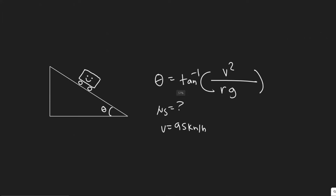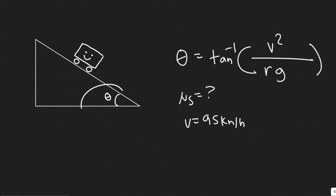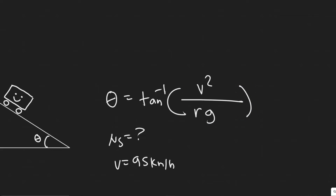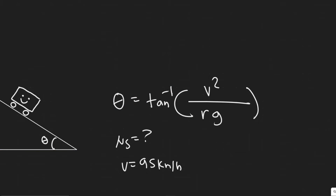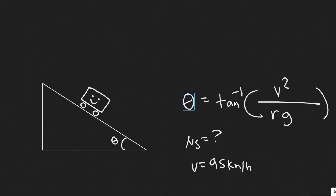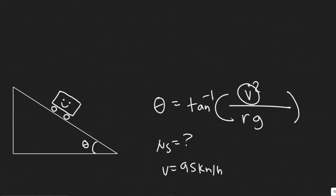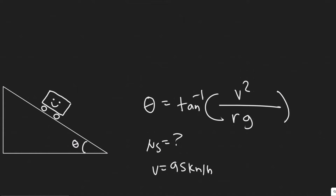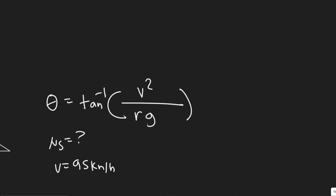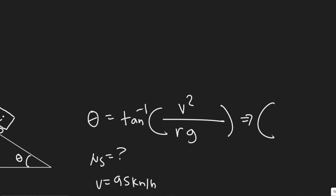The first thing we have to do to solve this is find the angle theta at which this is banked. The way we do it is by using a formula — if you look in your textbook at example 5-15, it gives you the formula for the banking angle given a specific speed and radius. The curve is properly banked for a car traveling 65 kilometers per hour, so the velocity we plug in is 65, and the radius of our track is 85 meters.